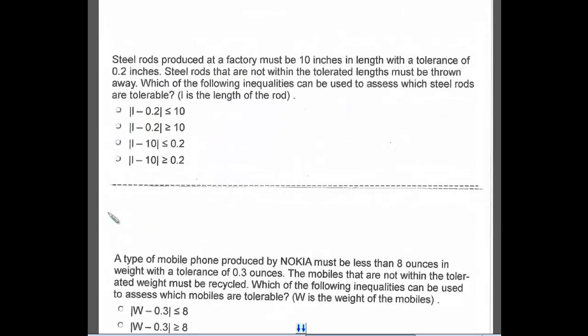Steel rods produced at a factory must be 10 inches in length with a tolerance of 0.2 inches. Steel rods that are not within the tolerated lengths must be thrown away. Which of the following inequalities can be used to assess which steel rods are tolerable? L is the length of the rod.